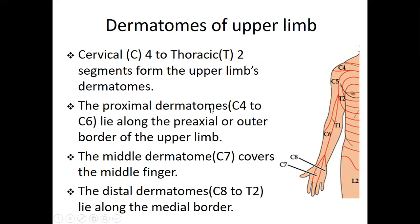The proximal dermatome, C4 to C6, lies along the pre-axial or outer border of the upper limb. The middle dermatome is C7, which covers the middle finger. And the distal dermatome, C8 to T2, lies along the medial border - the post-axial border of the upper limb.